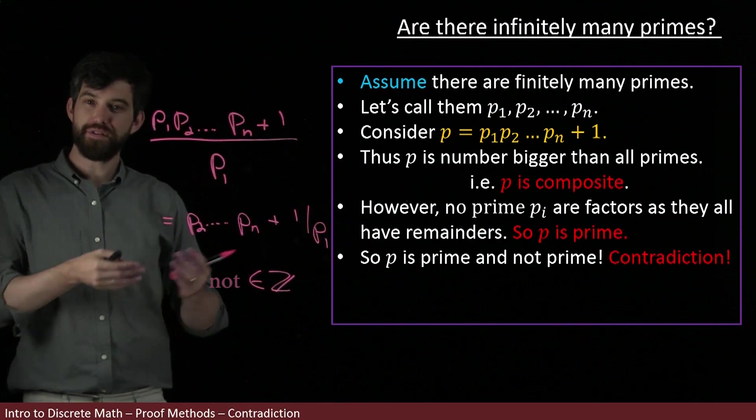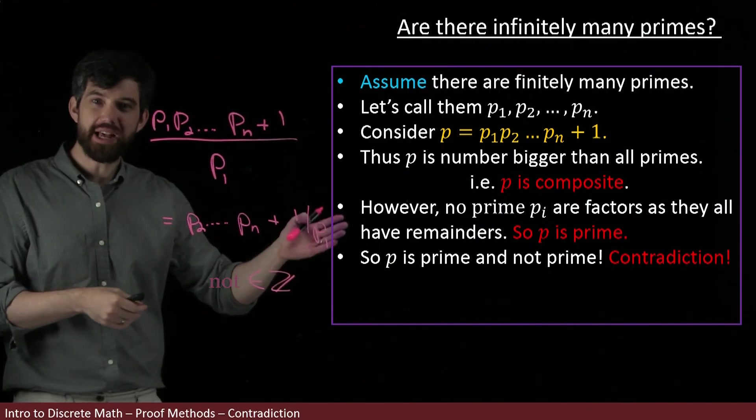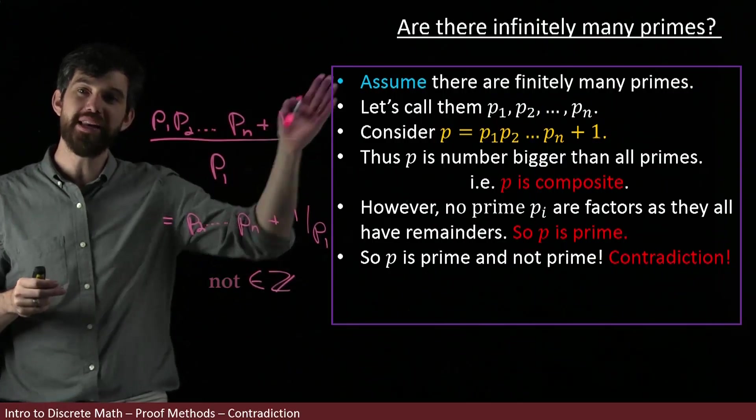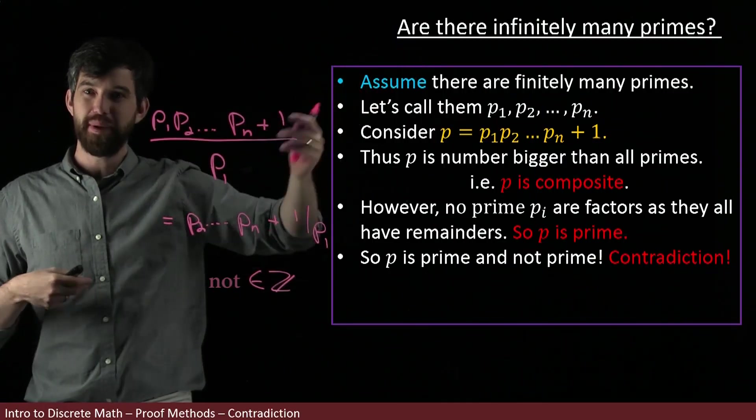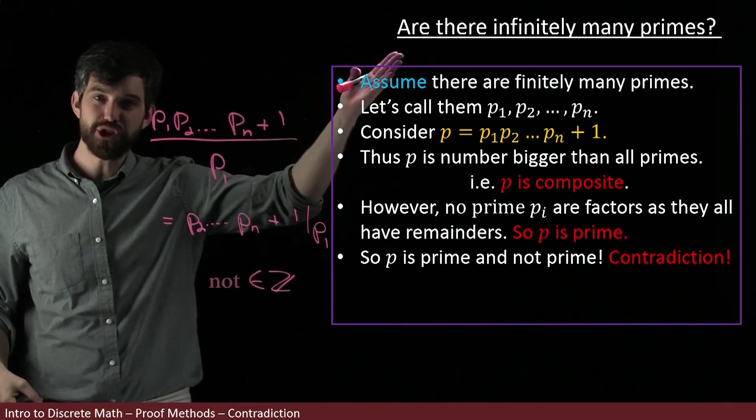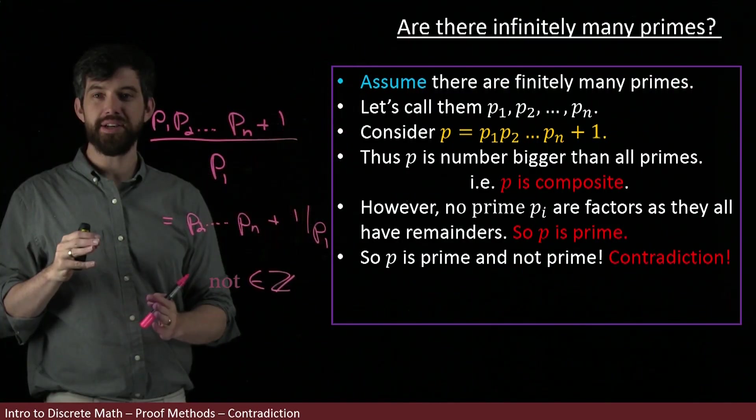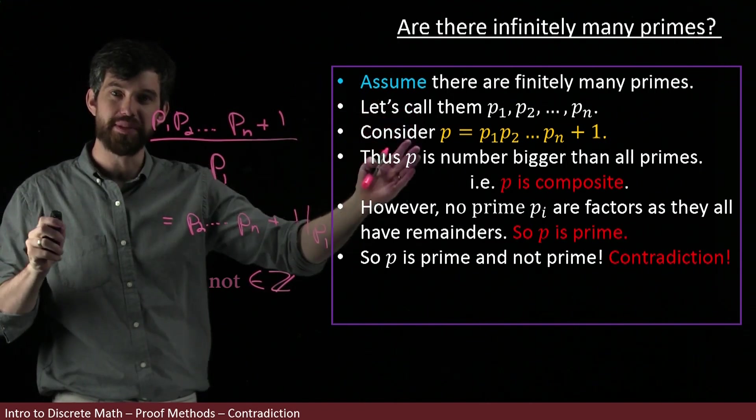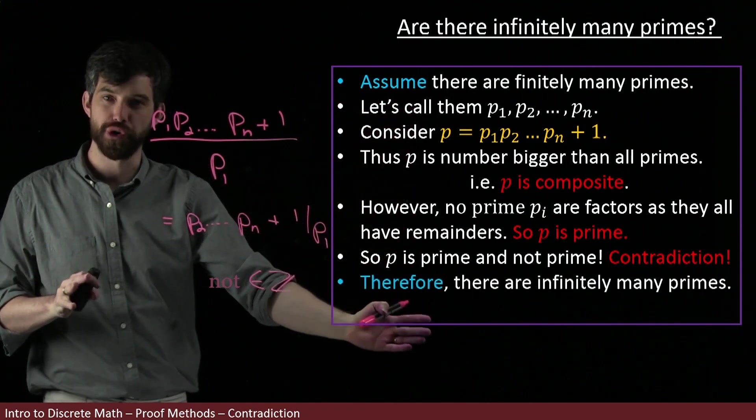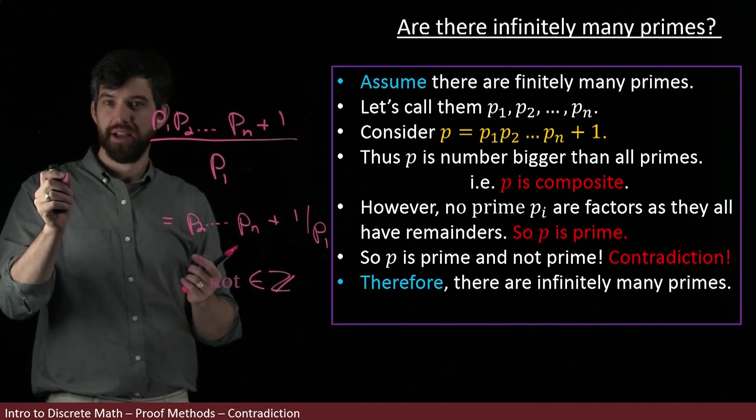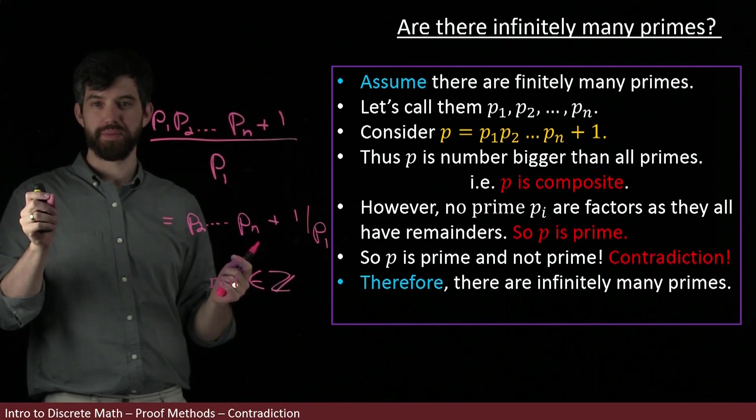If I've gotten a contradiction, that tells me my initial assumption was the problem. My initial assumption was false, because if I assumed it was true, I got garbled nonsense. So indeed, my assumption must be false. And if it's false that there are finitely many primes, it's therefore true that there are infinitely many primes. I have proven there are infinitely many primes.